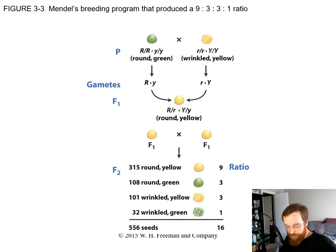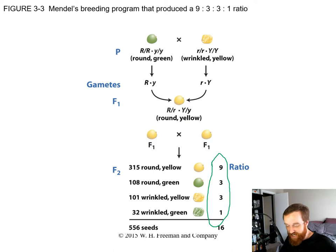The textbook slide is just showing exactly what I pointed out — that this ratio is a nine to three to three to one ratio.